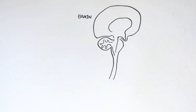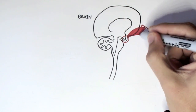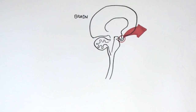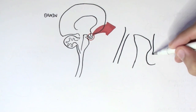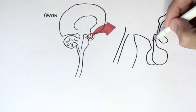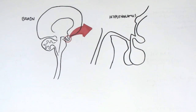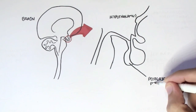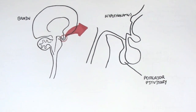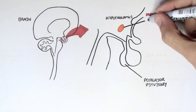Here we have a brain. If we zoom into the area known as the diencephalon — the area where the hypothalamus and pituitary glands are — here we have the hypothalamus and the pituitary glands. We're particularly focusing on the posterior pituitary. Within the hypothalamus there is a special nucleus known as the paraventricular nucleus, which synthesizes antidiuretic hormone.